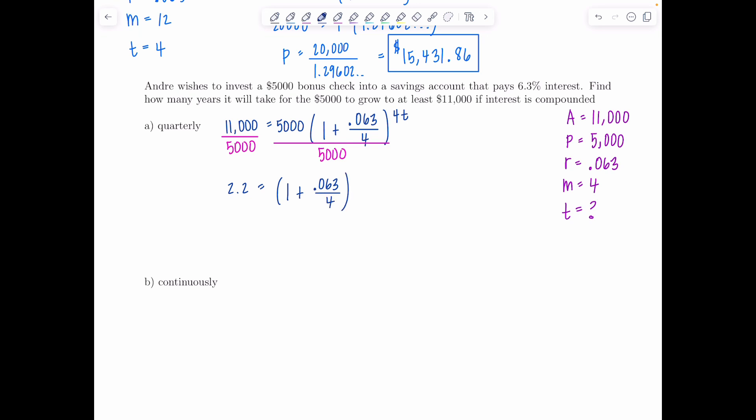I'm going to leave this as one plus point zero six three divided by four because it's not going to come out to a nice decimal. One plus point zero six three divided by four is one point zero one five seven five. Do we want to write all that out? Sure I guess we can. It doesn't go on forever so let's just do it. One point zero one five seven five and then we still have exponent four T.